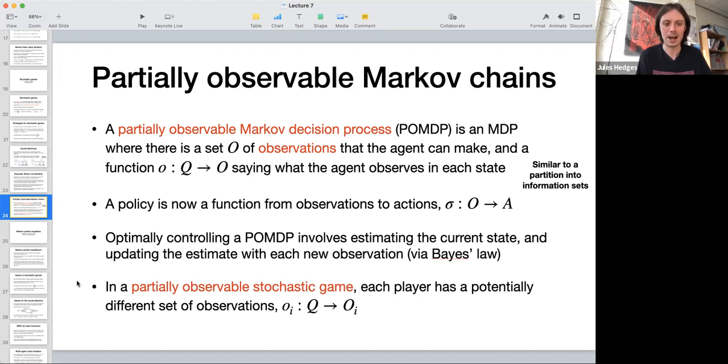The reason I bring this up now in this video is that there's also a thing called a partially observable stochastic game, and we can give each player a potentially different set of observations. Each player is going to have a function that says what they can observe given the current state. For example, we have different agents with different kinds of sensors who can make different kinds of observations about the world.